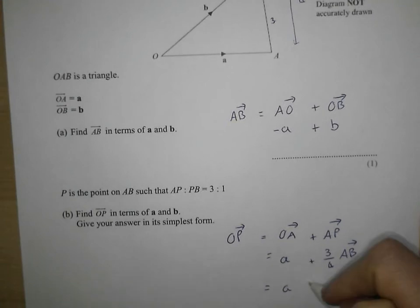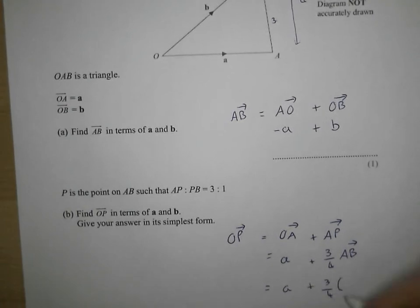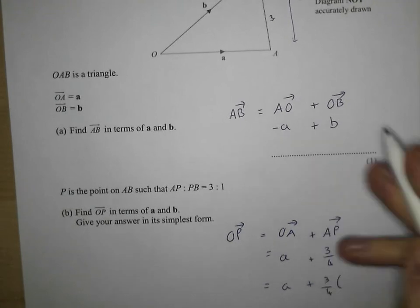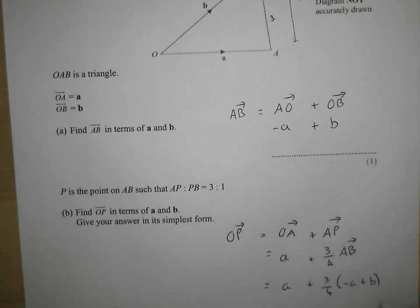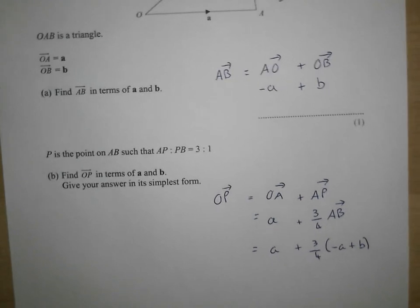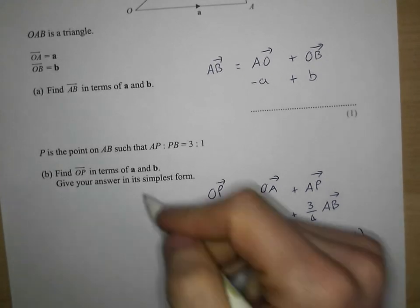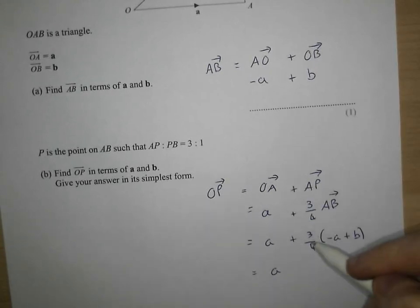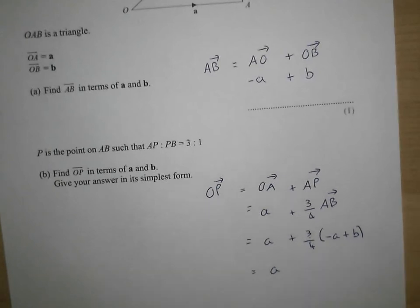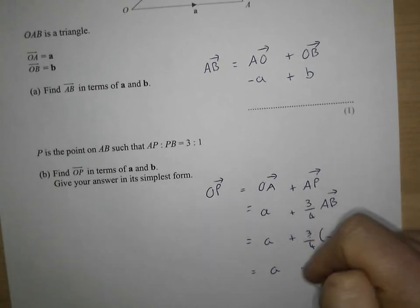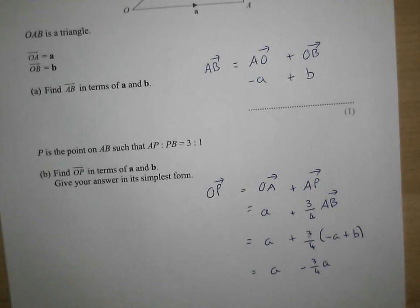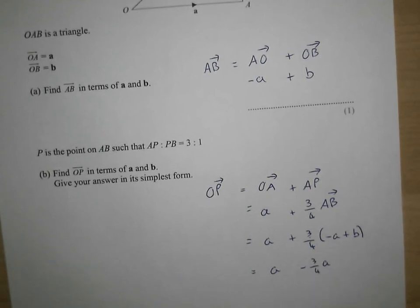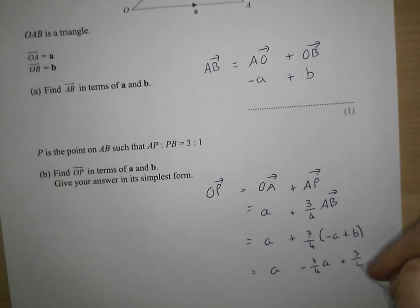So we get a plus three quarters of the vector AB. Now AB is minus a plus b. Now this is where you've got to switch on. You've got to be pretty good at your fractions here and multiplying out. So let's have a look because I want it in its simplest form. Now I've got most of my marks already, but let's finish the job off. So I get three quarters of minus a. Three quarters of a whole minus a. Well, that's just going to be minus three quarters of a. That's all that is. Three quarters of minus a is minus three quarters of a. Three quarters of positive b, that's just three quarters of b. That's not too bad.